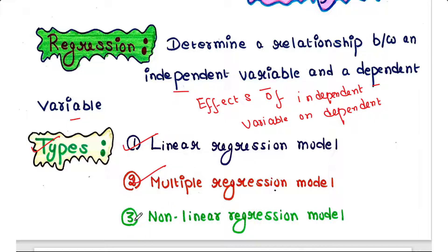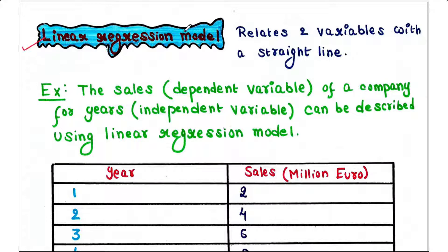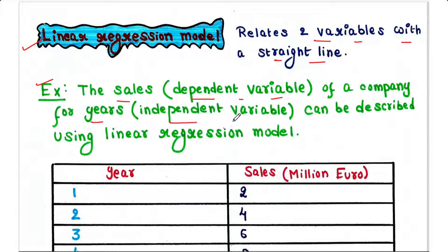The types of regression models: there are three types — linear regression model, multiple regression model, and nonlinear regression model. The linear regression model relates two variables with a straight line. For example, the sales of a company for years can be described using a linear regression model. Sales is the dependent variable and time — that is, years — is the independent variable.